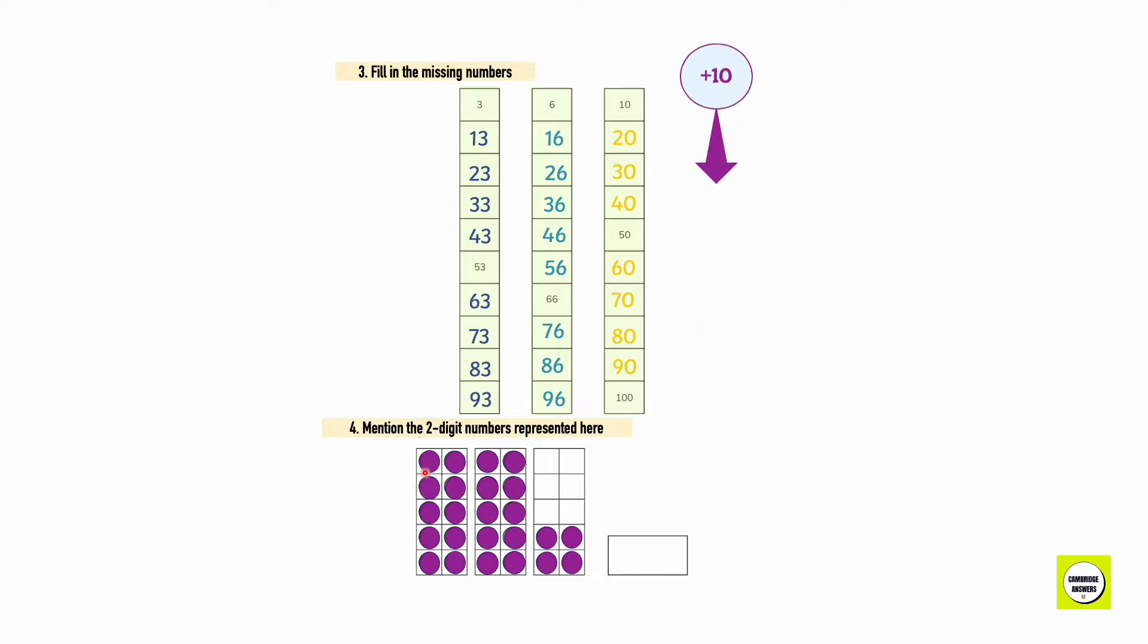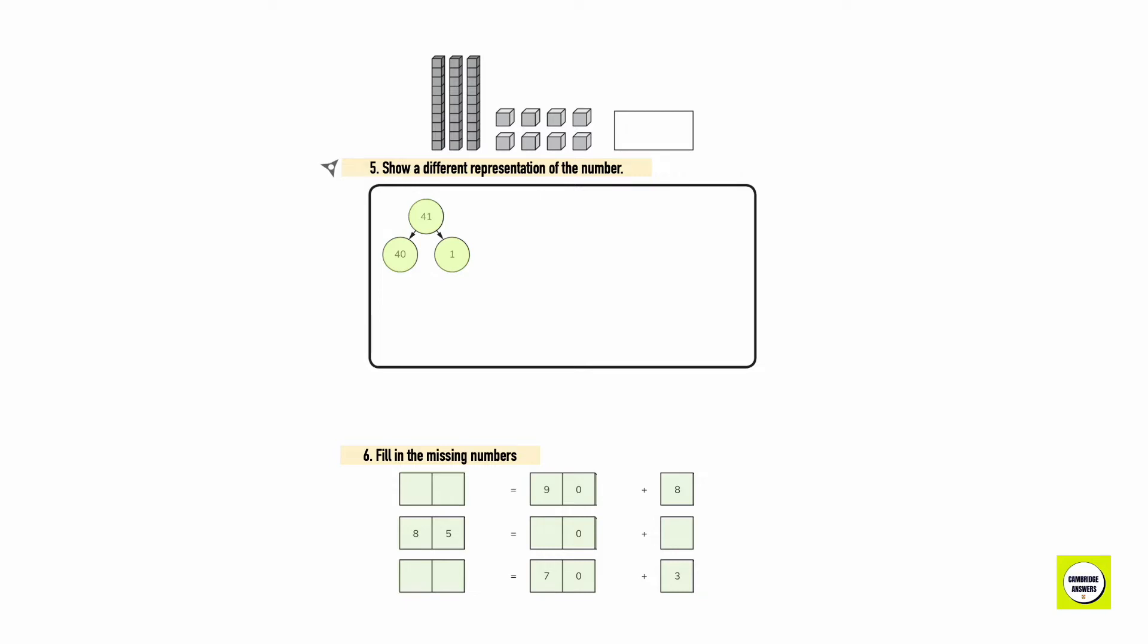Mention the two digit numbers represented here. We have one 10 over here and another 10 over here. We have two 10's and four 1's. So the number represented over here is 24. Over here we have three 10's and eight 1's. 38.